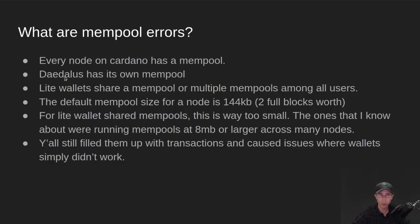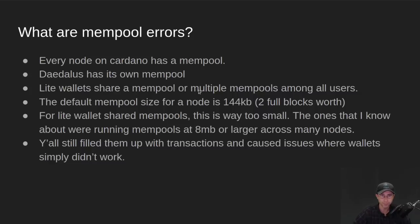So Daedalus is a full node wallet. It has its own node and its own mempool. Light wallets share a mempool — or multiple mempools if they have multiple servers — among all their users. So as you're using a light wallet, you are in contention with some of the other users of that light wallet. Daedalus still did okay last night with all the congestion, but then again, Daedalus doesn't have some of those features you need to do things like DeFi. So there are trade-offs there.